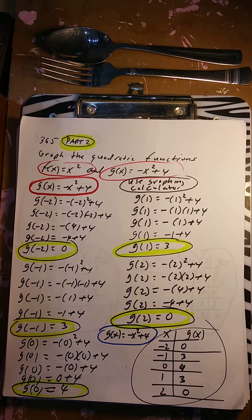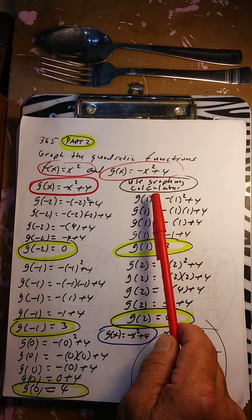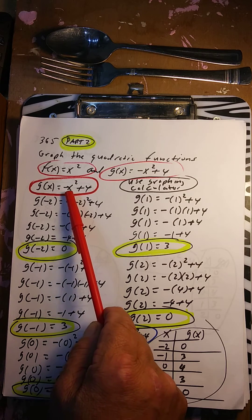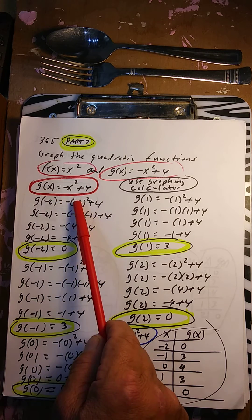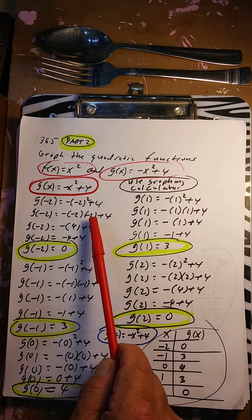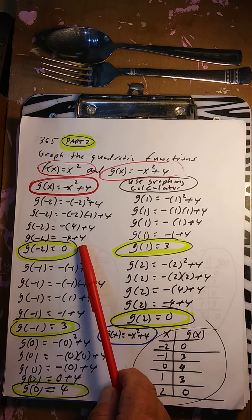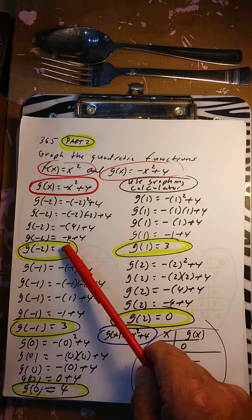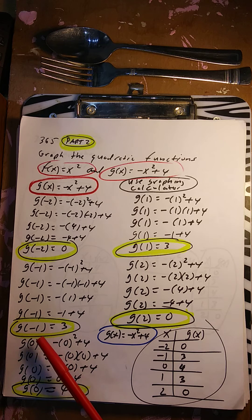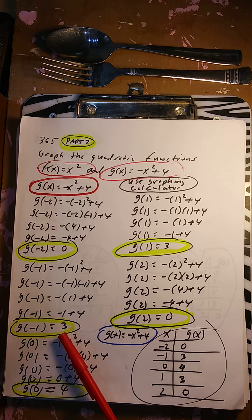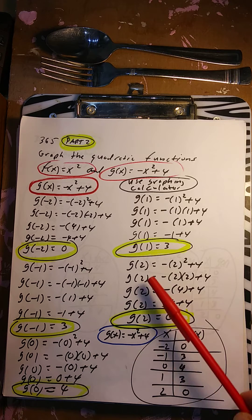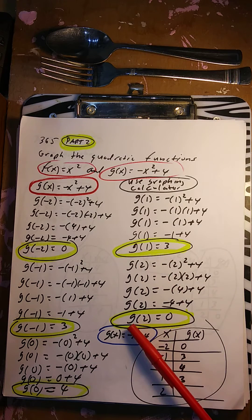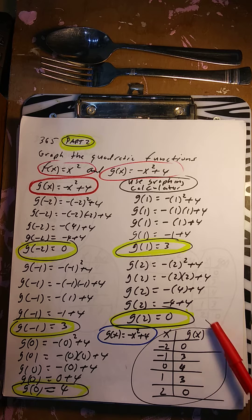Now let's do g(x) = -x² + 4. Same thing — you can do it the long way or put it in your graphing calculator. g(-2) = 0, g(-1) = 3, g(0) = 4, g(1) = 3, and g(2) = 0. We have our table of ordered pairs.